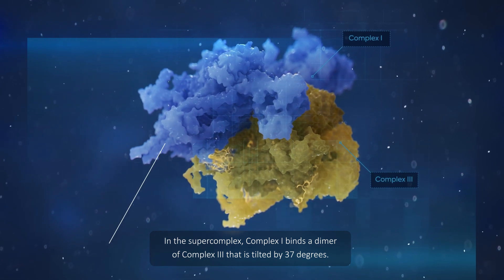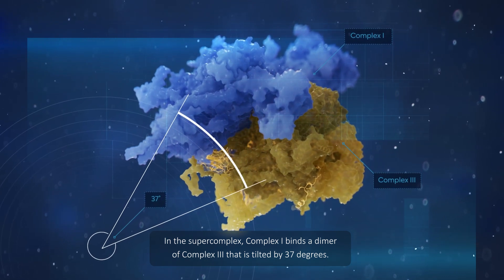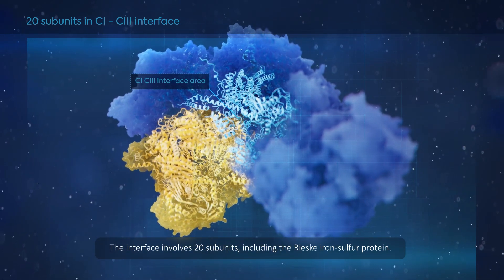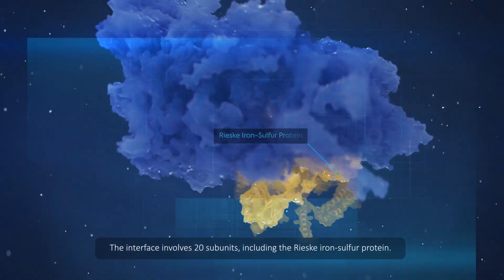In the supercomplex, complex 1 binds a dimer of complex 3 that is tilted by 37 degrees. The interface involves 20 subunits, including the Rieske iron-sulfur protein.